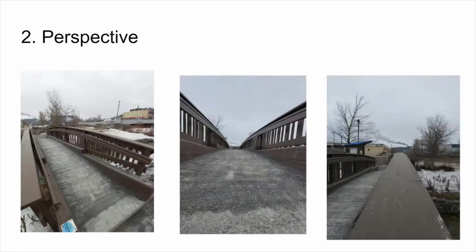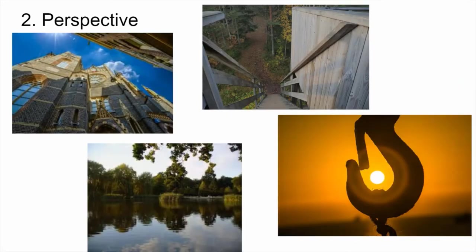The second tip is perspective. We want to look at your subject of interest from multiple angles. I took a picture of the bridge from the side, then knelt down for a ground-level view, then along the railing. Other examples include looking up at a building, looking down stairs, using natural reflections off water, or using something already in your environment to frame your subject — like using a hook to give the sun its own natural frame.